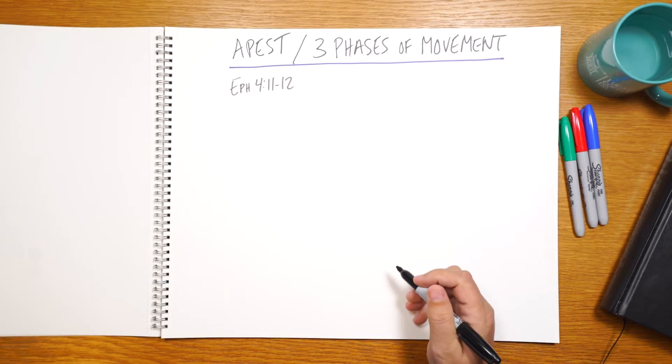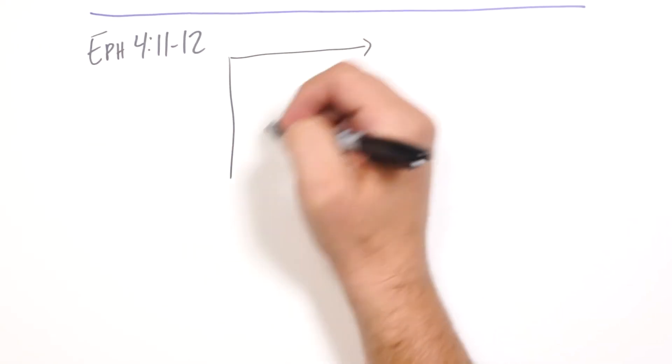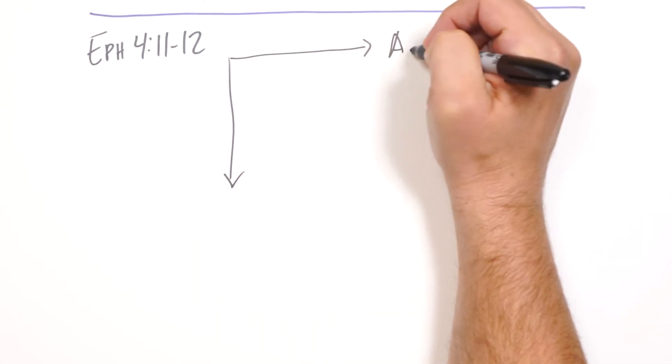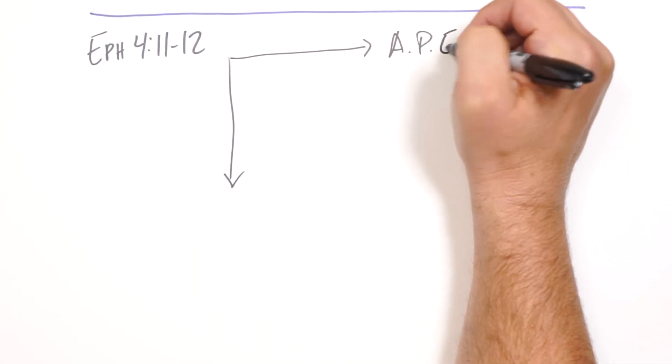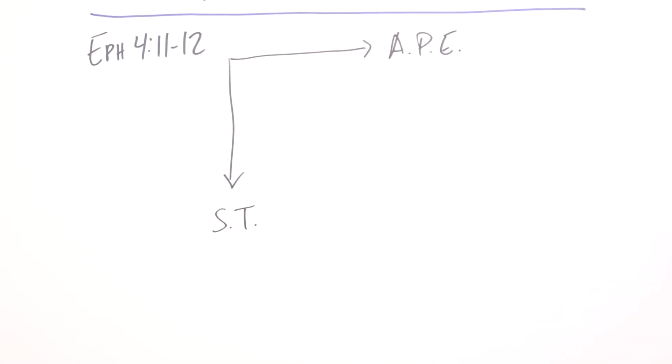So we see that according to this passage, he's given some to be apostles, prophets, evangelists, shepherds, and teachers.